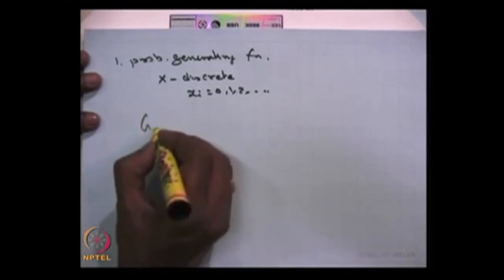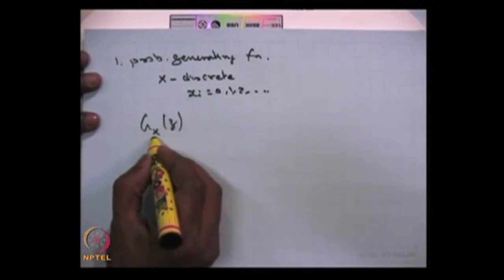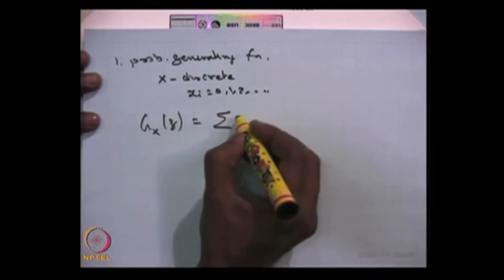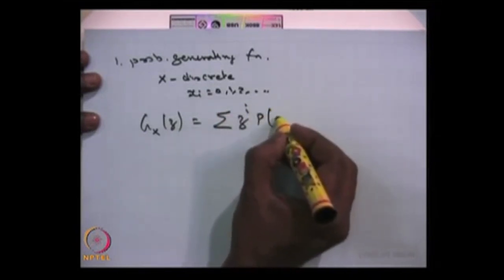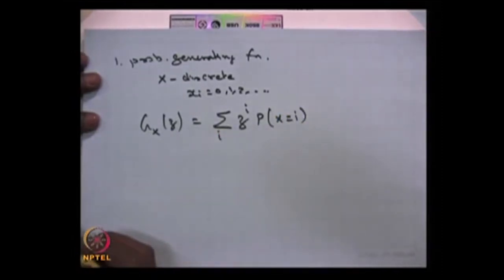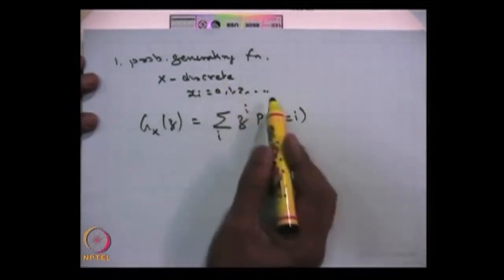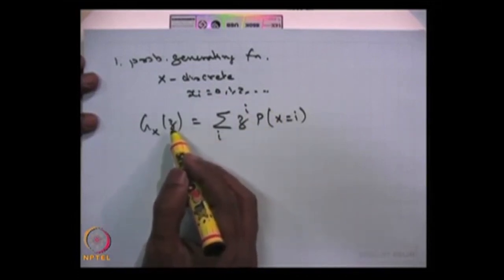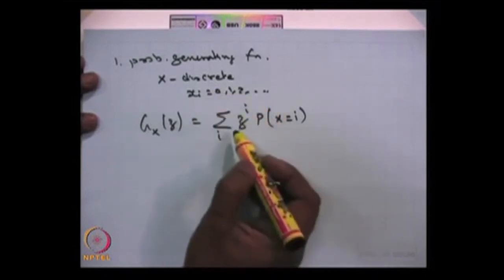The probability generating function for the random variable X, with notation G, is a function of Z, that is nothing but summation of Z power i times the probability that X takes the value i, for all possible values of i. If the discrete random variable takes only countably finite values, then the probability generating function is a polynomial; if it takes countably infinite values, then it is going to be a series.